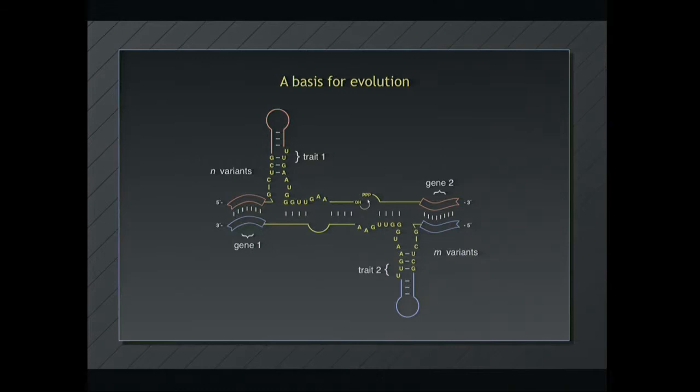These systems could replicate and compete. But how do they mutate? They mutate because there's opportunity for recombination between the two genetic loci in this synthetic genetic system. So there's the combinatorial opportunity for n times m possible recombinants from a library of n variants in gene 1 and corresponding trait, and m variants in gene 2 and corresponding traits.